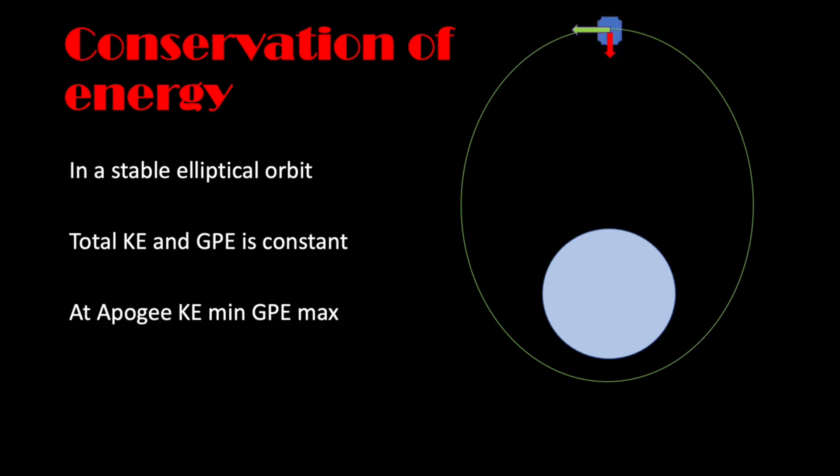So at apogee, you're really far away. That means a high gravitational potential energy, hence a low kinetic. When you're at perigee, when you're closest, you have a high kinetic energy, but a low gravitational potential energy.